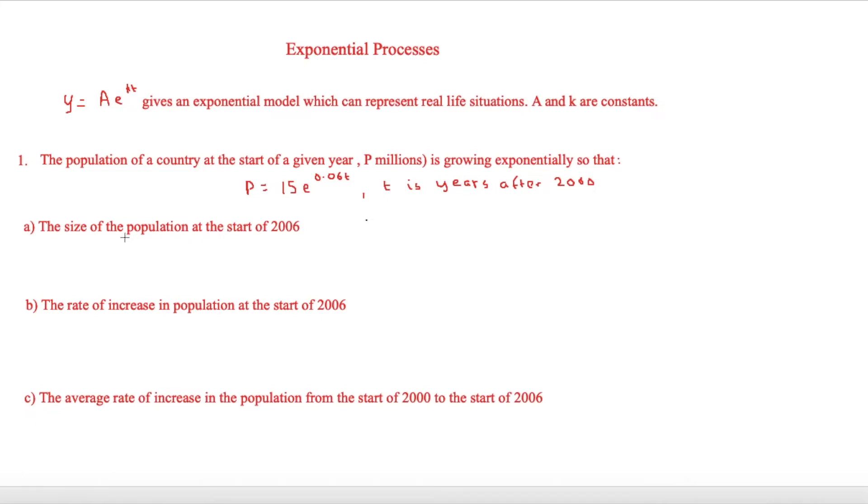The first question asks, what is the size of the population at the start of 2006? In order to do this we just have to put some numbers in. So 15e to the 0.06 times by t. Because it's 2006 and t is after 2000, therefore t will equal 6. And if you type that in on your calculator, you'll get 21.5 million.